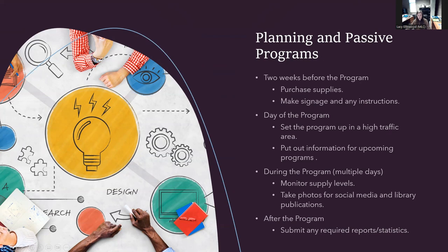Two weeks before the program, you'll want to purchase supplies, make signage and any instructions to leave out, and for craft programs you'll want to complete a sample. The day of the program, set it up in a high traffic area, and if specialty supplies are needed, set up close to a service desk. Put out your library newsletter and flyers for upcoming programs. During the program, monitor supplies, keep a statistical count of how many supplies are consumed, take photos for social media, and after the program submit any required reports or statistics.